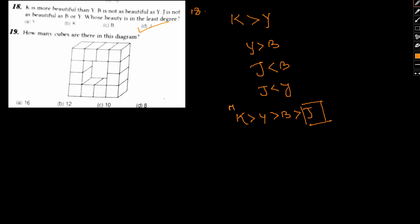This is the highest and this is the lowest. I hope this is clear. So having said that, let's move on to number 19 now. How many cubes are there in the diagram? So we have been given this diagram and we are asked how many cubes are actually there in the diagram.